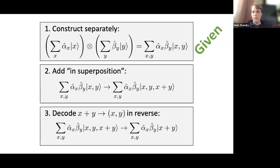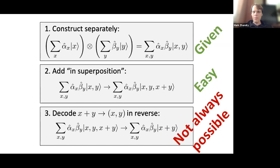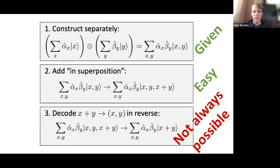Because we don't expect to be able to construct the product state in general, we don't expect this decoding to be possible in general. There's a lot more information in (x, y) than in x+y — twice as many qubits. So we're only going to be able to decode in very special situations where x and y are so constrained that x+y uniquely determines both x and y.